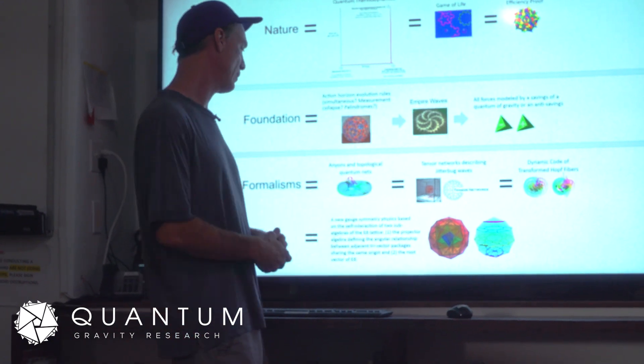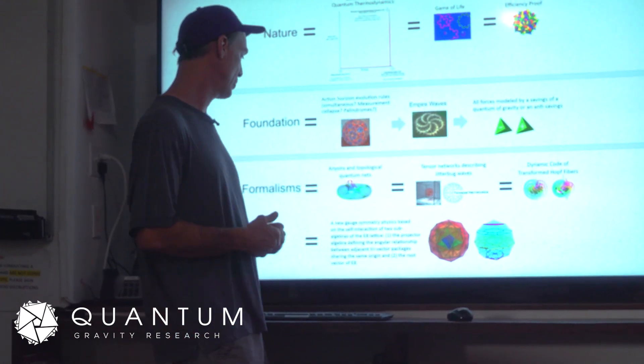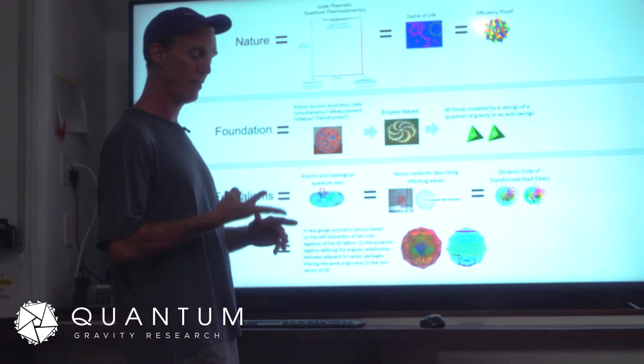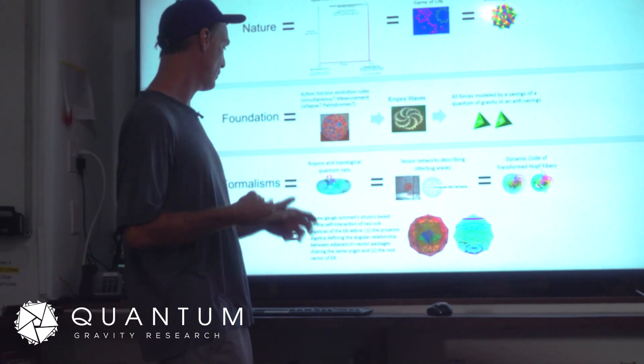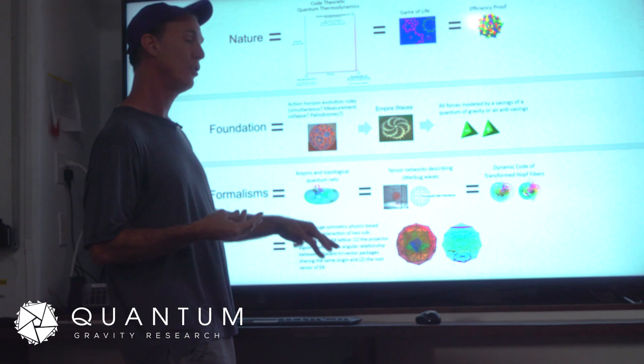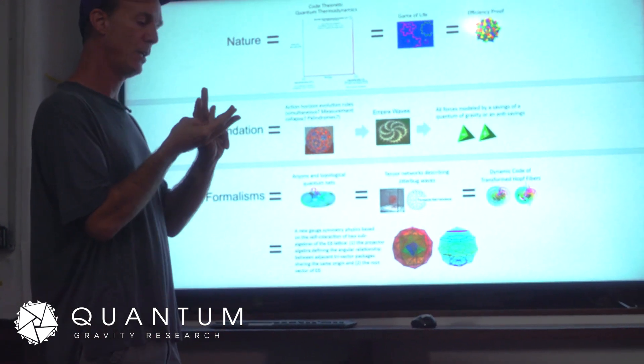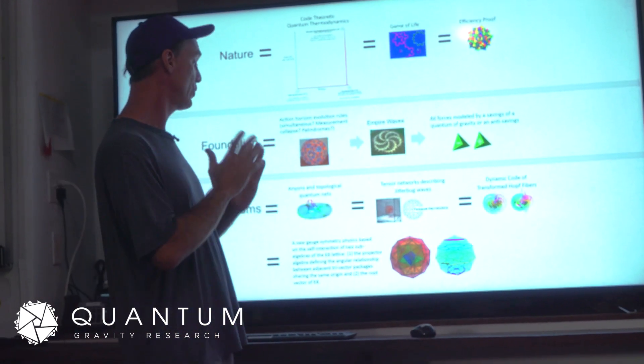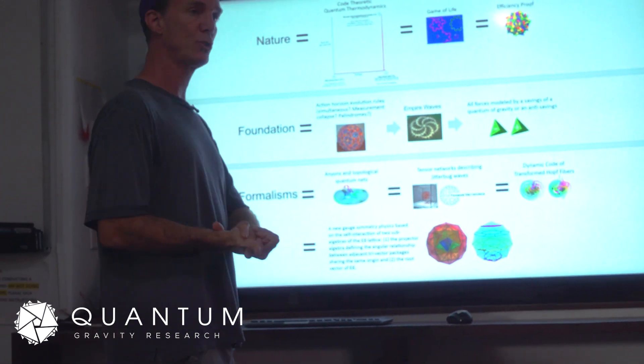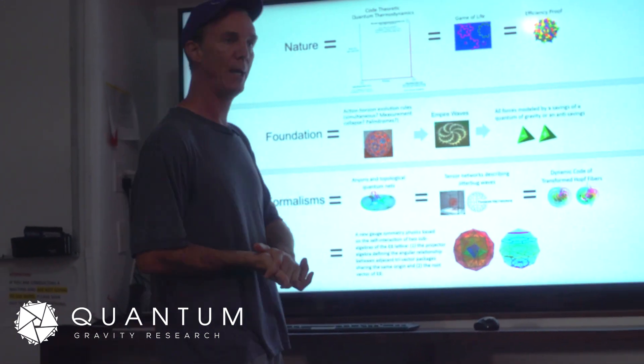One is the projector algebra that defines the angular relationship between adjacent trivector packages—in other words, tetrahedra, trivectors sharing the same origin. You have two adjacent trivectors sharing the same origin, and the relationship between them is a dihedral angle.